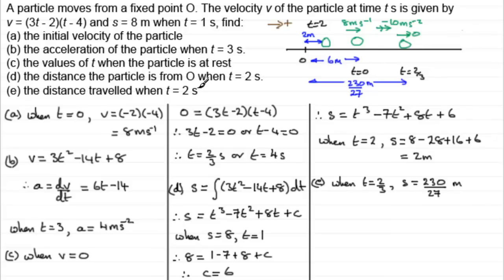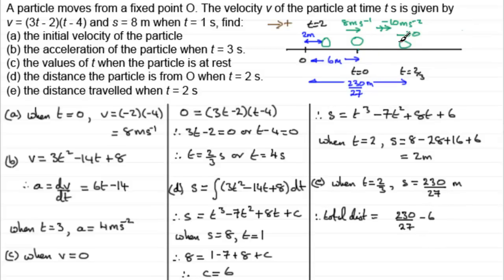To find the total distance travelled, we work out the outward distance: 230/27 minus 6, then double it for the return journey, and add on 4 metres (the 2 metres from O plus the 6 metres back to the starting point). So total distance equals 2 times (230/27 minus 6) plus 4. Working this out gives exactly 244/27 metres.